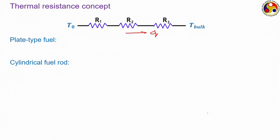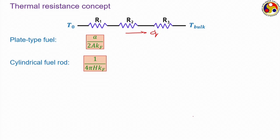These are the expressions for fuel resistance for both plate-type and cylindrical fuel rod geometries. The resistance is inversely proportional to the thermal conductivity of the fuel — a very logical observation. Higher thermal conductivity means smaller resistance and therefore a smaller temperature difference between the fuel centerline T_0 and the surface temperature T_s at the fuel-cladding interface.